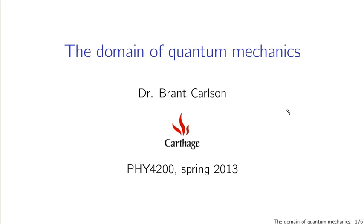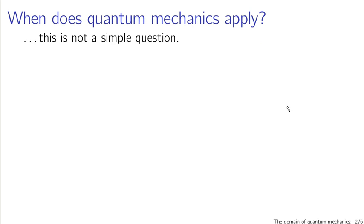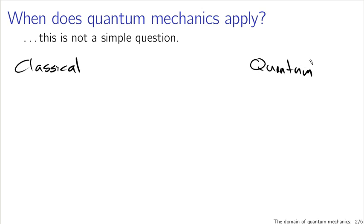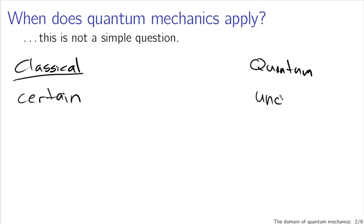The domain of quantum mechanics is unfortunately not a particularly simple question. When does it apply? On the one hand you have classical physics and on the other hand you have quantum physics, and the boundary between them is not really all that clear. On the classical side you have things that are certain, whereas on the quantum side you have things that are uncertain.